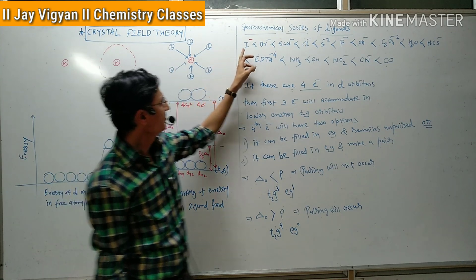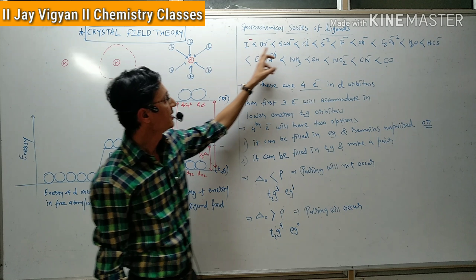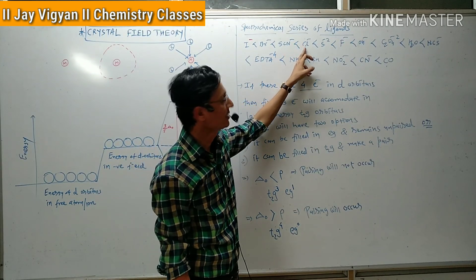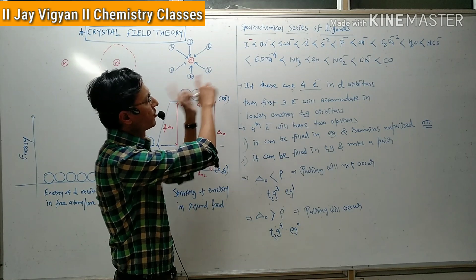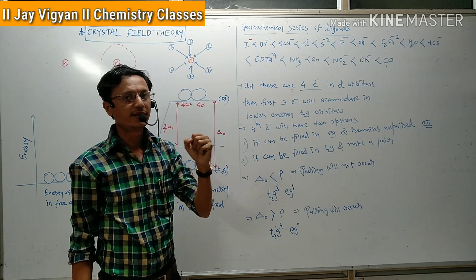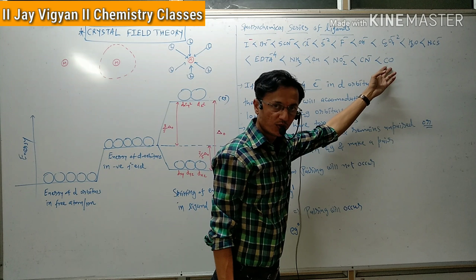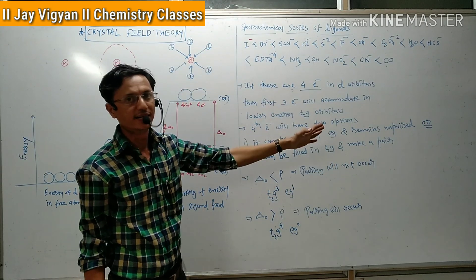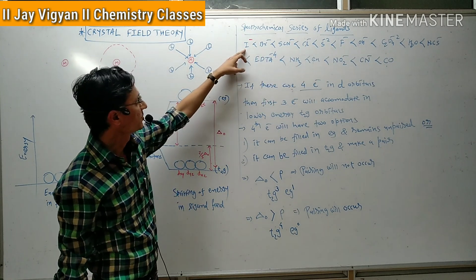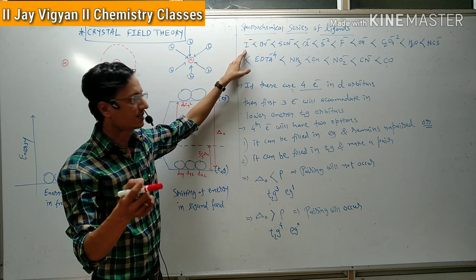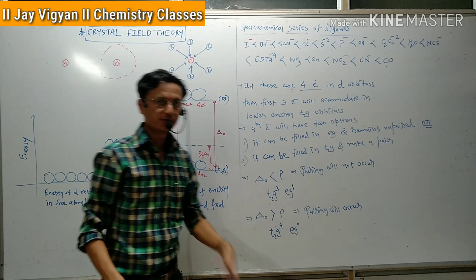Moving through the spectrochemical series: Br⁻ is slightly stronger than I⁻, then SCN⁻, then Cl⁻, then S²⁻, and so on. If you move from left to right in this series, the strength of the ligand gradually increases. Carbon monoxide, named as carbonyl as a ligand, has maximum strength. In the spectrochemical series, iodine is the weakest field ligand. This is the spectrochemical series which we have to remember.